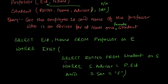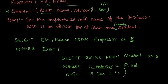The inner query — SELECT roll_number FROM student AS s WHERE s.advisor = p.eid AND s.sex = 'F' — runs for each professor record. Note that p.eid comes from the outer query, making this a correlated query. If the inner query returns at least one value, EXISTS returns true and that professor record is included in the outer query's result. This way we find professors who advise at least one female student.